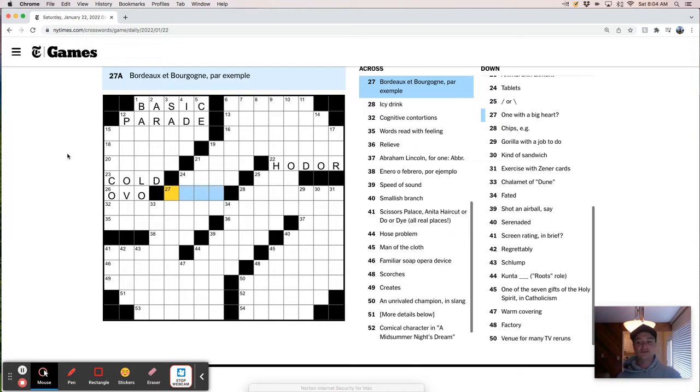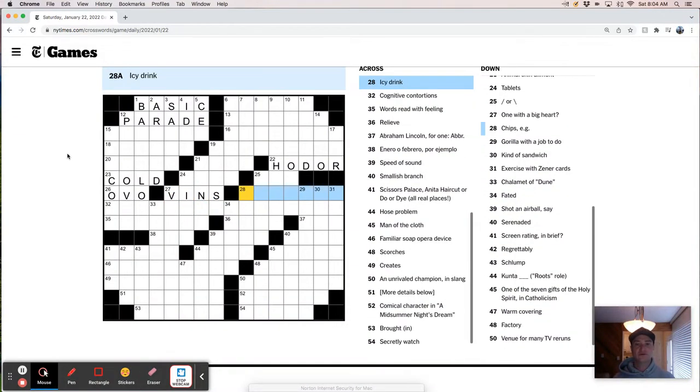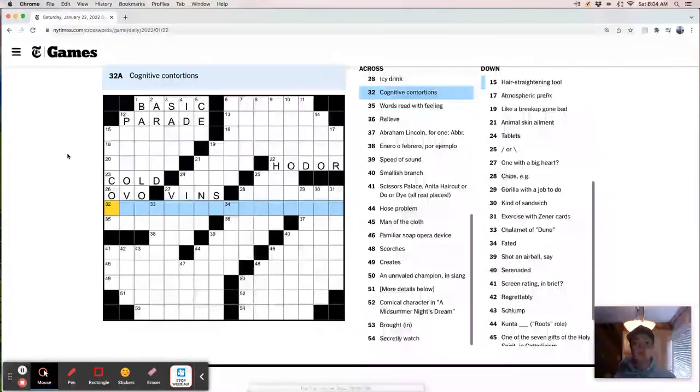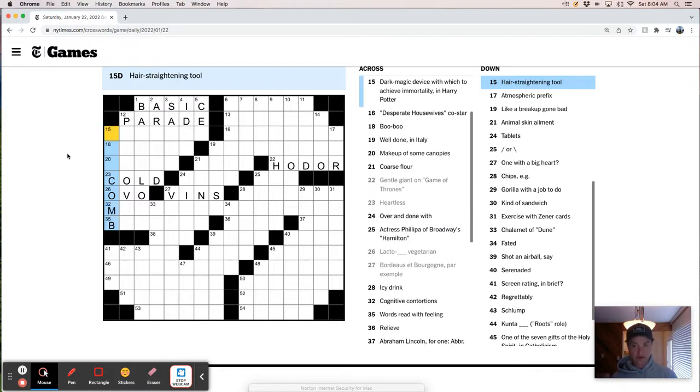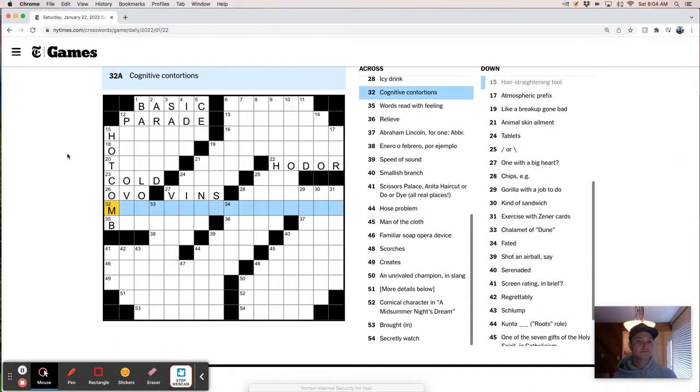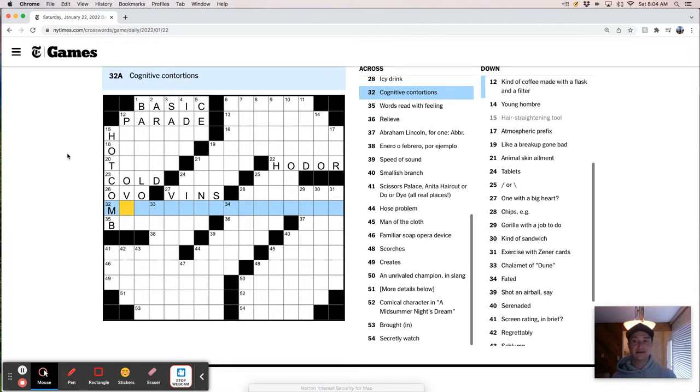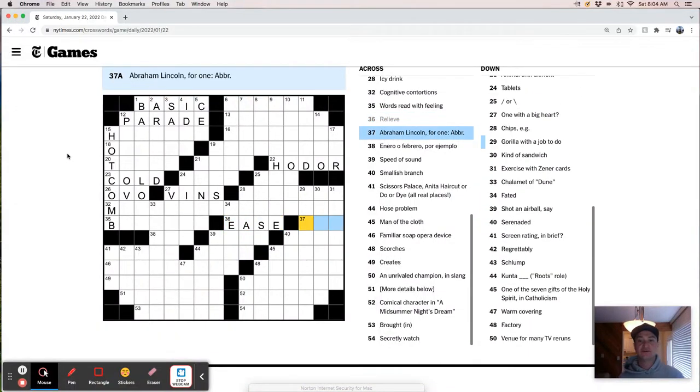Bordeaux and what? So these are like states or regions or... Well, maybe it's wines? Cognitive contortions. Icy drink. Cognitive contortions. Like mind-bending puzzles. Tongue twisters. Something comb, right? Hot comb. Cognitive contortions. I bet it's mind something. Coffee made with a flask and a filter. Mind. Words read with feeling. Feeling. Words read with feeling. Relieve is ease. Abe Lincoln.